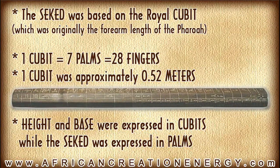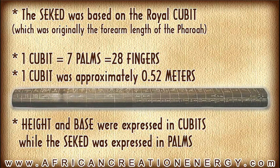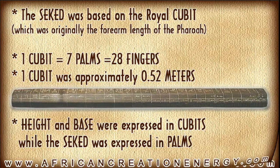The Seqed was based on the unit of measurement called the royal cubit. The royal cubit was originally the forearm length of a pharaoh. One cubit was equal to seven palms, and each palm was divided into four fingers, with a total of 28 fingers in the royal cubit. The royal cubit is approximately 0.52 meters in our metric system. In pyramid mathematics, height and base were usually expressed in cubits, while the Seqed was expressed in palms.